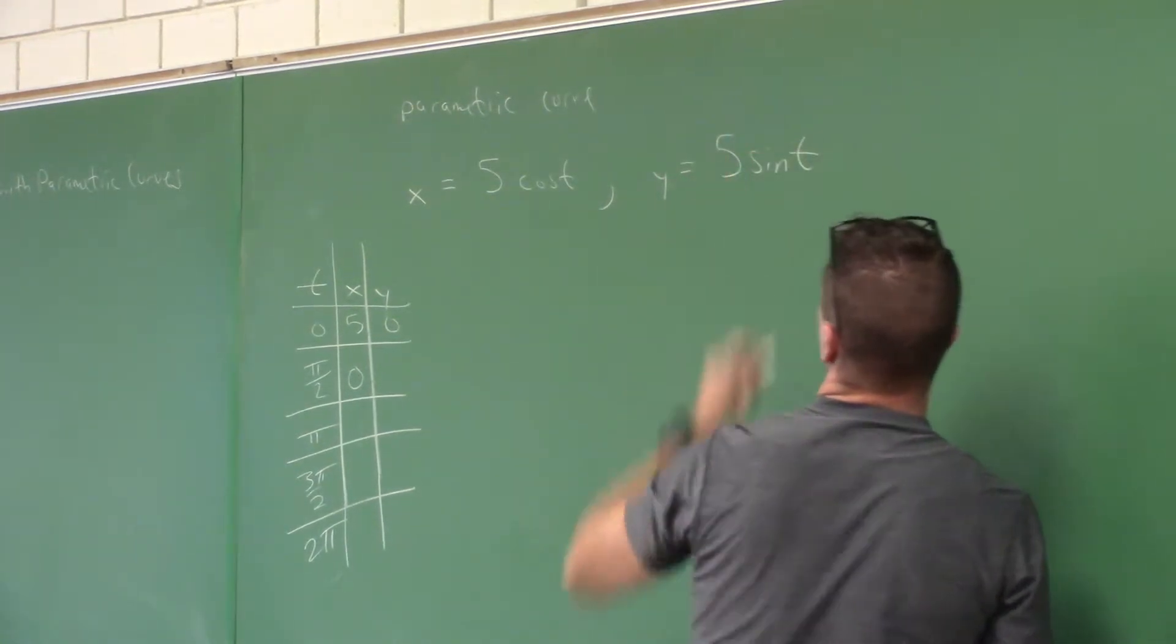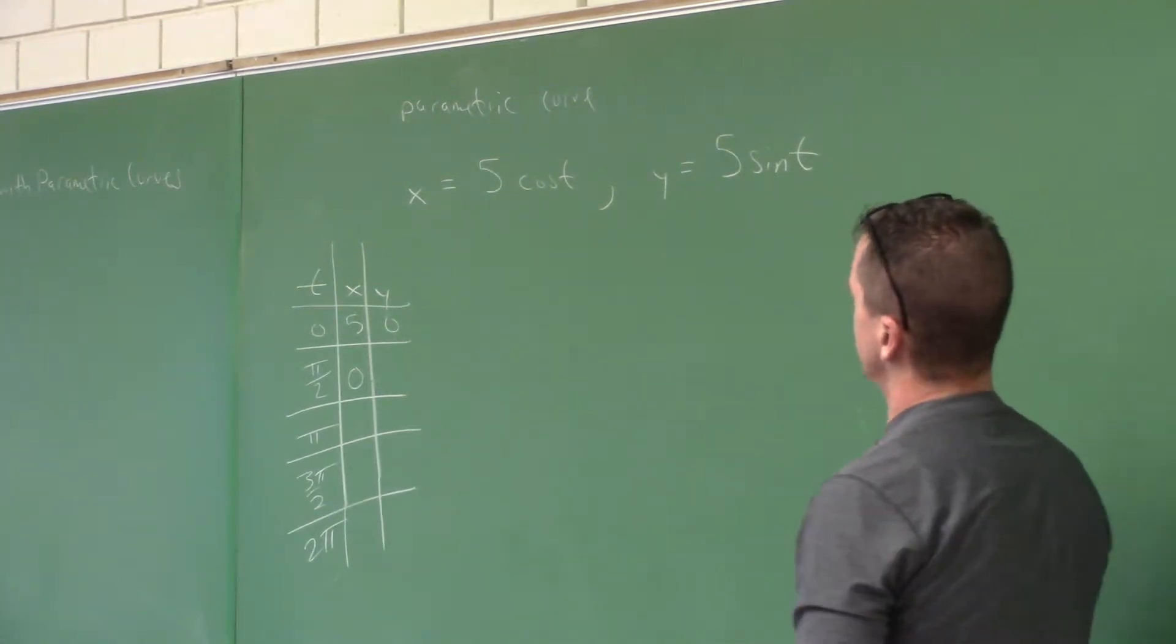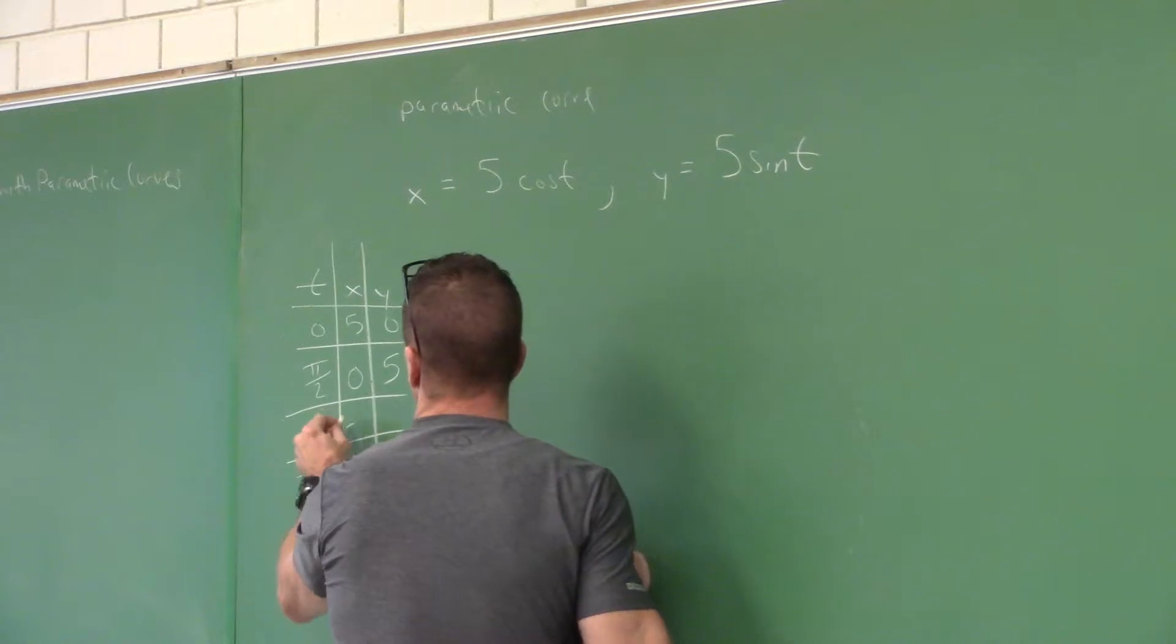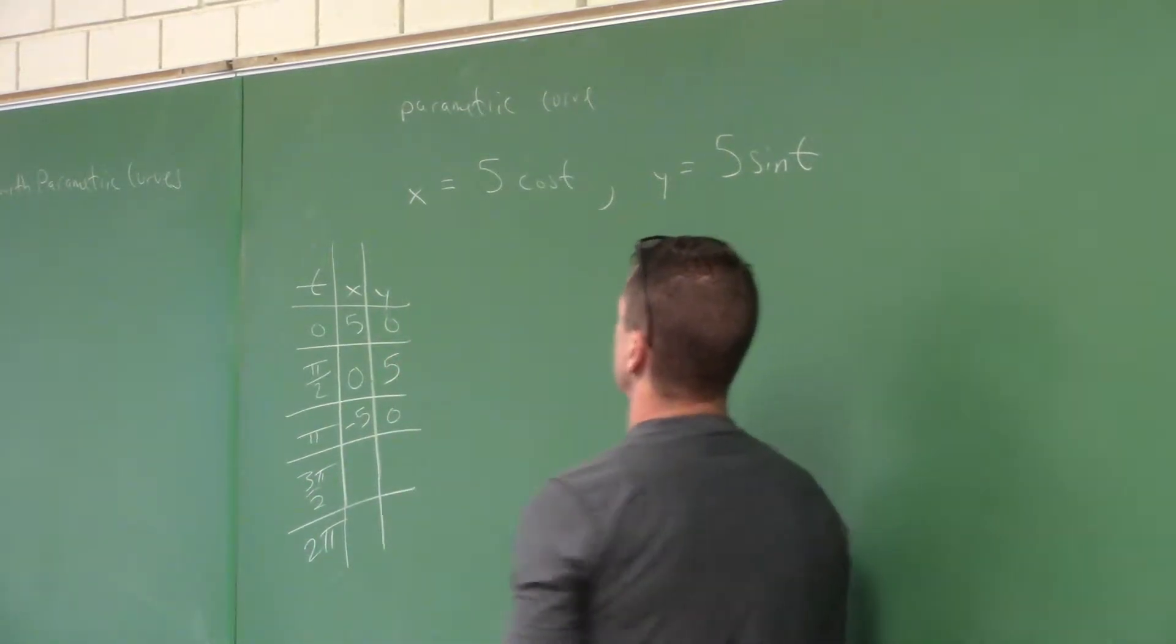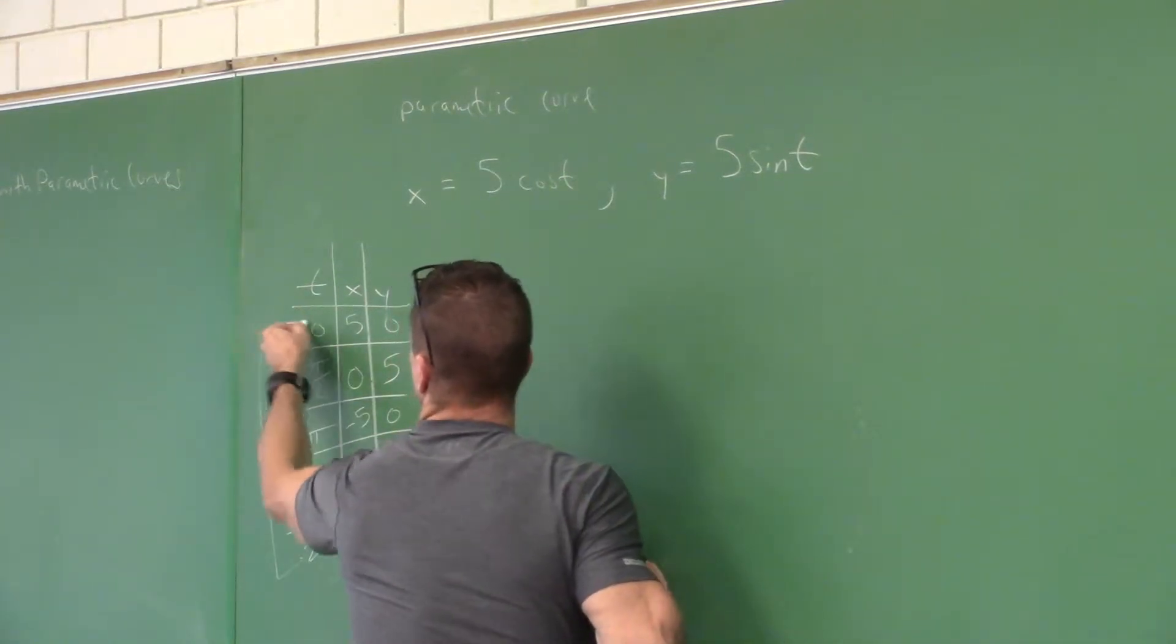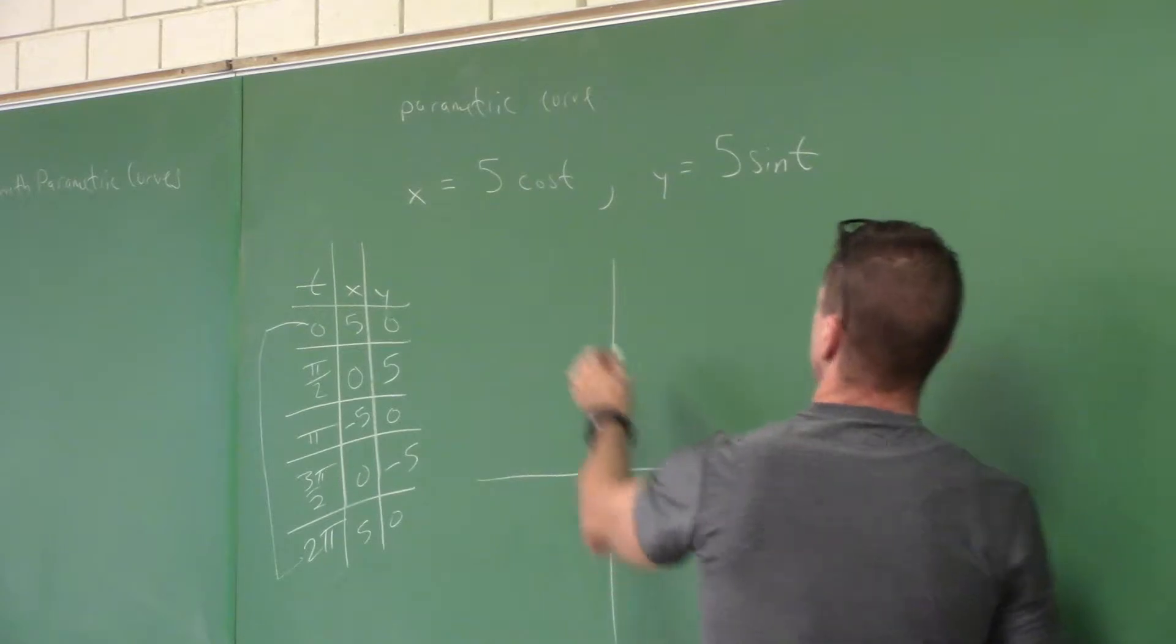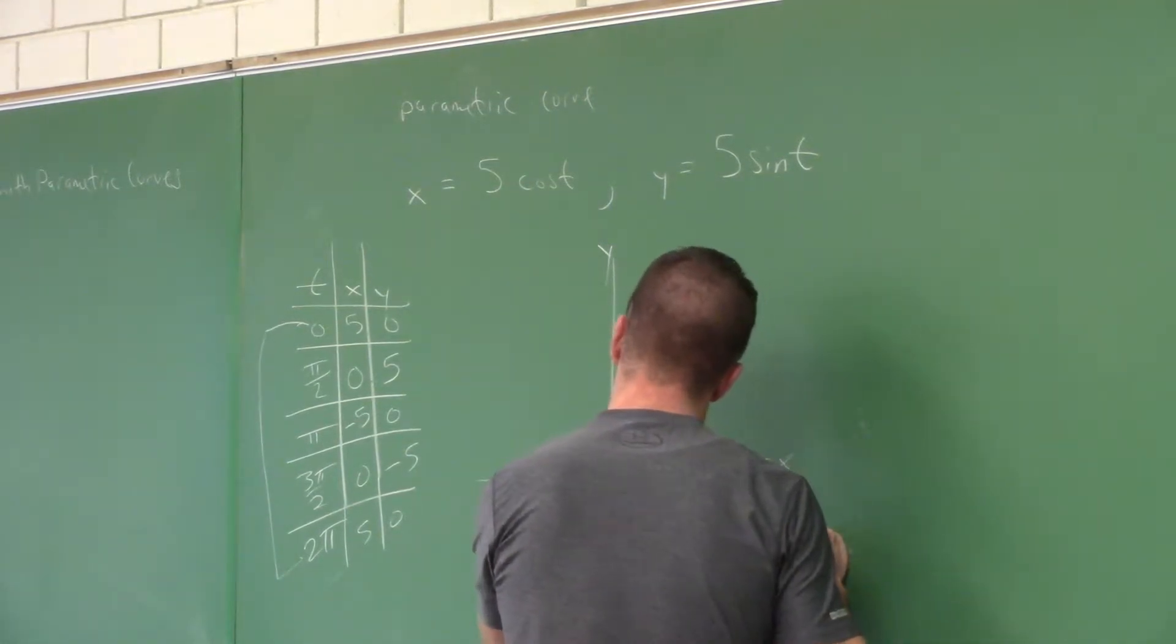If we got 5s, those coefficients that go in front of sine and cosine, that comes out to 5. That's negative 5, 0. That's 0, negative 5. And finally, this point's the same as this point, 5, 0. We'll sketch the curve.